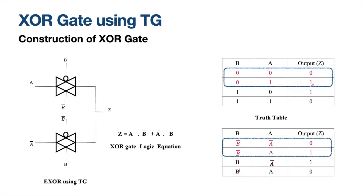Now, we already know the output. The XOR gate is an inequality detector. Therefore, for the combinations 0,1 and 1,0, the outputs will be 1. For combinations where inputs are equal — 0,0 and 1,1 — the output will be 0 and 0. So I am retaining the same table for output Z.